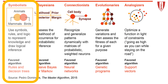Symbolists use formal systems and are influenced by computer science, linguistics, and analytic philosophy. They use decision trees, production rule systems, and inductive logic programming.